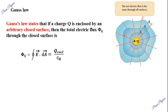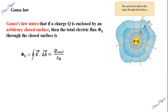Now, you can consider an arbitrary area. Students, the charge enclosed is plus Q. So, the total flux linked with the surface is equal to 1 by epsilon-zero times the charge enclosed by the surface. That is Gauss's law.